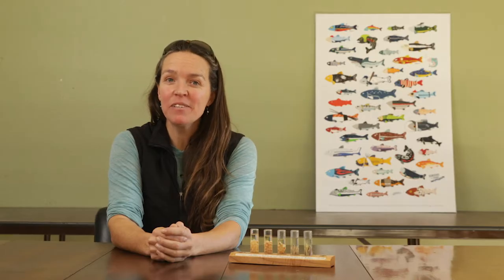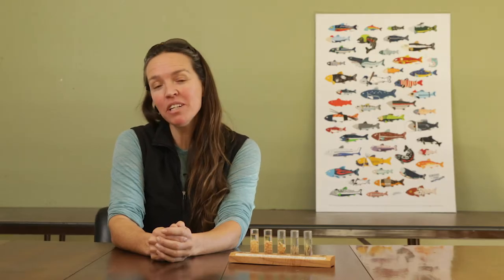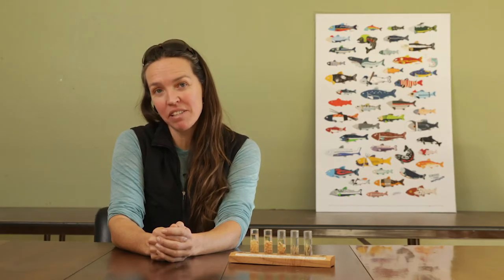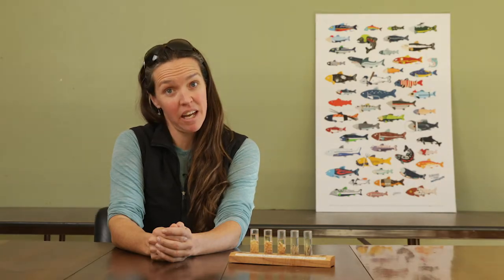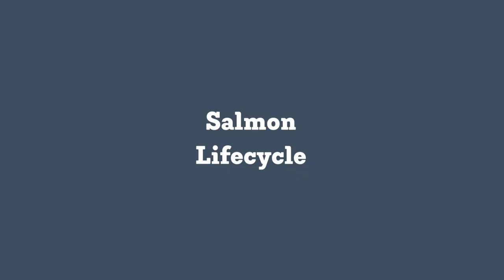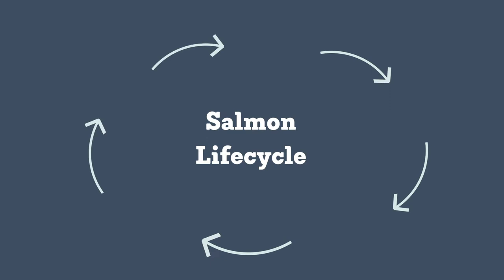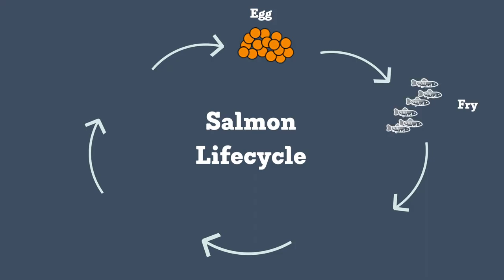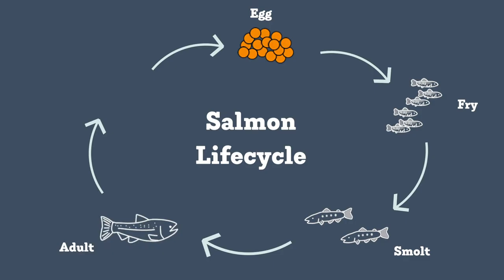Greetings again, friends. Now we're going to look at the life cycle of salmon and steelhead. There are five main stages of their life cycle: egg, fry, smolt, adult, and spawner.